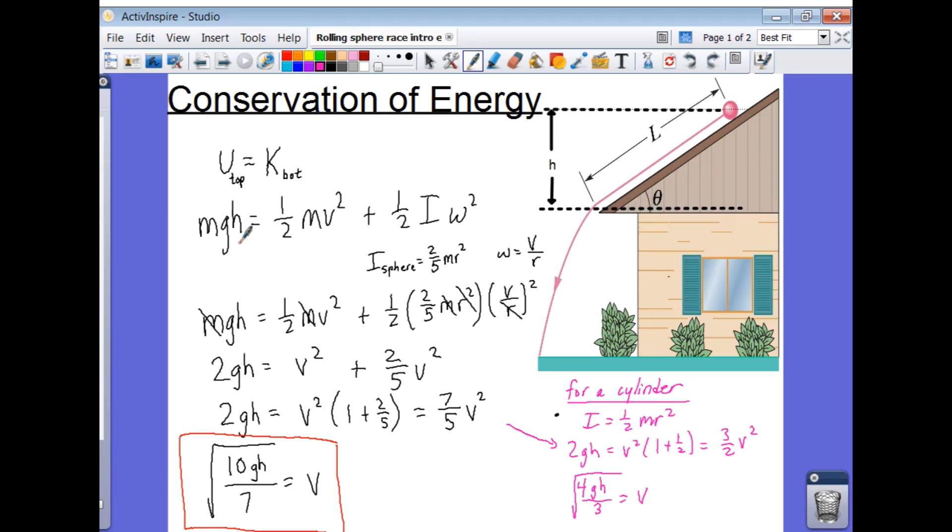So at the top, where it starts to roll, it has potential energy of MGH. Then when it reaches the bottom of the roll, it has both translational kinetic energy and rotational kinetic energy. So the total kinetic energy is the sum of both the translational kinetic energy and the rotational kinetic energy.